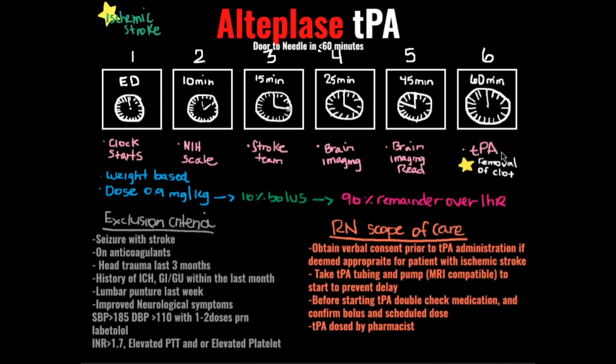Before starting TPA, double check your medication to ensure you have the right bolus and the right dose. This medication is weight-based and will be prepared by your pharmacist, who will verify the correct patient weight. The dose is 0.9 milligrams per kilogram: the first 10% of that dose is given as a bolus, and the remaining 90% is given over one hour. Always double and triple check and document appropriately.